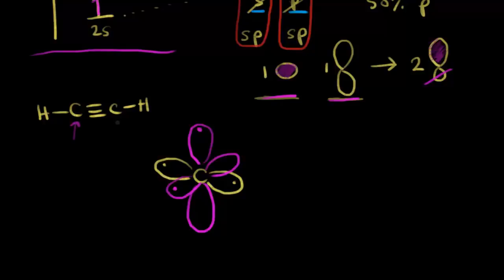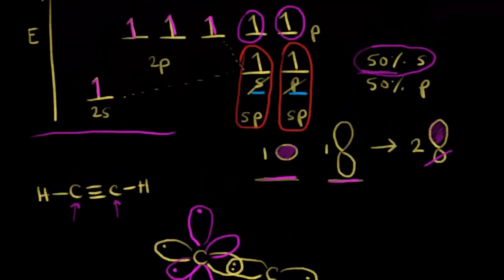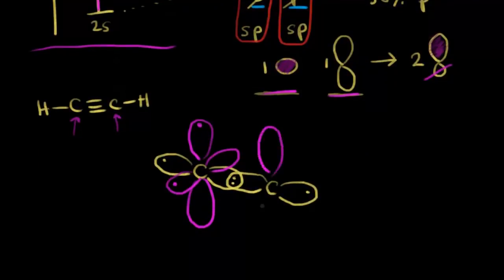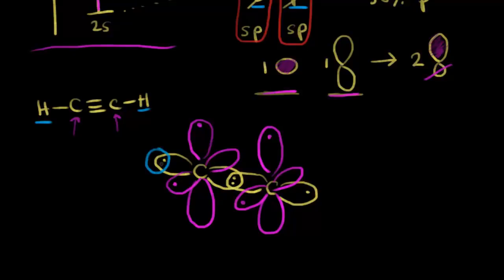Now let's draw the right carbon, which is also sp hybridized. It has two sp hybrid orbitals each with one valence electron, and two unhybridized p orbitals each with one valence electron. Finally, we add hydrogen on either side. Hydrogen has one valence electron in an unhybridized s orbital. So on each end we have a hydrogen with one valence electron in an s orbital. Now we can analyze the bonding present.